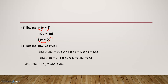Example number 3: expand 3b squared times (2b cubed plus 3b). We multiply 3b squared by each term. For the first part: 3 times 2 is 6, and b squared times b cubed — when multiplying powers you add the exponents — gives b to the power of 5. So the first term is 6b to the power of 5.